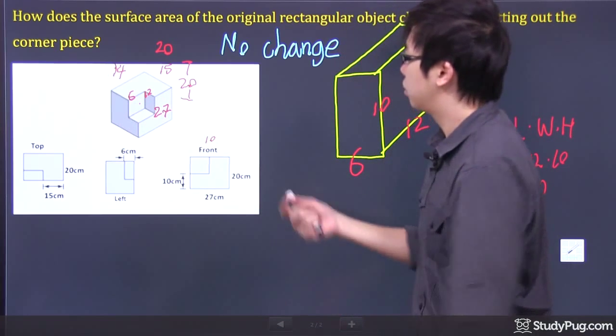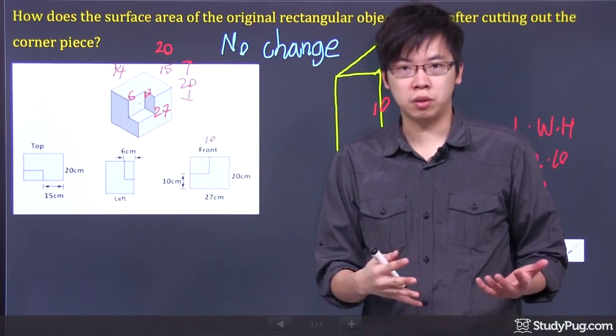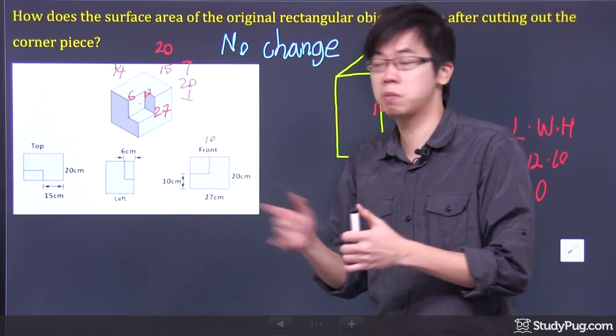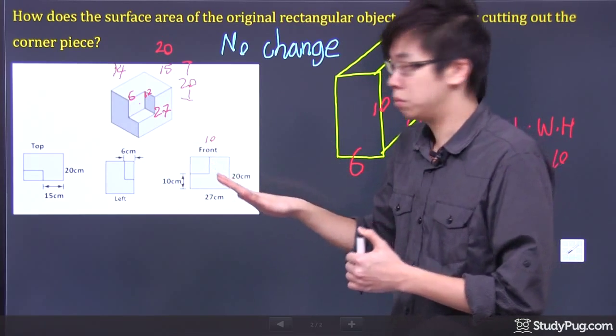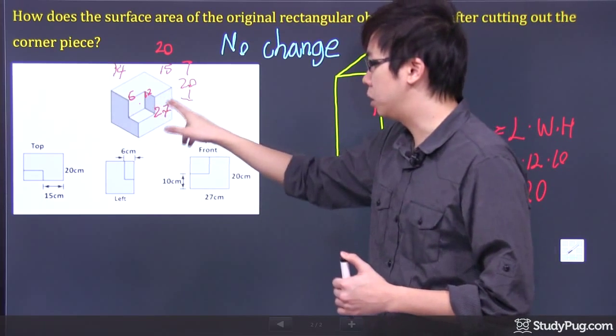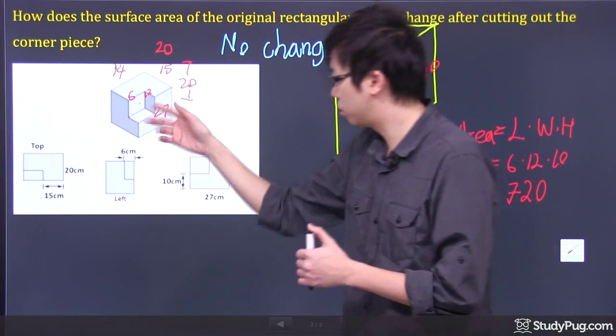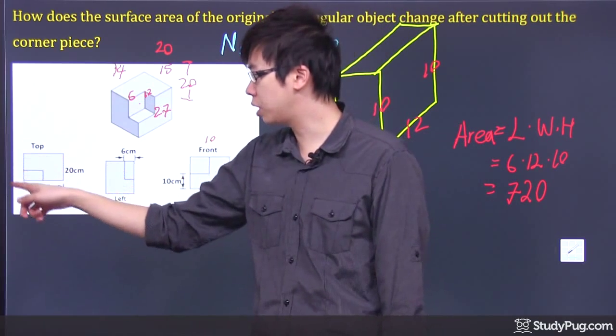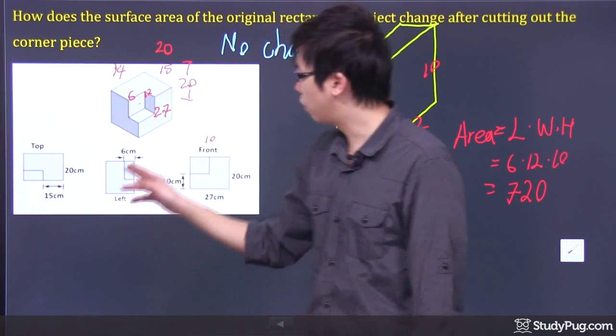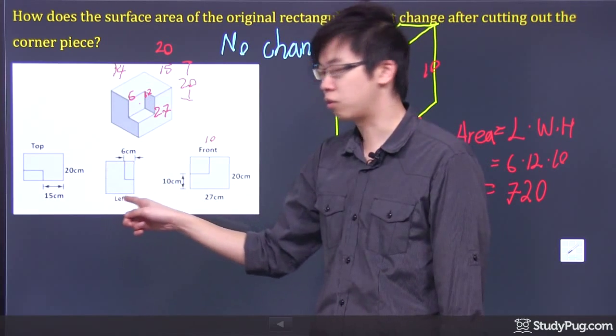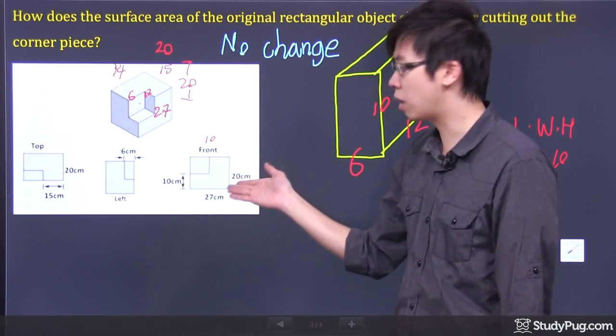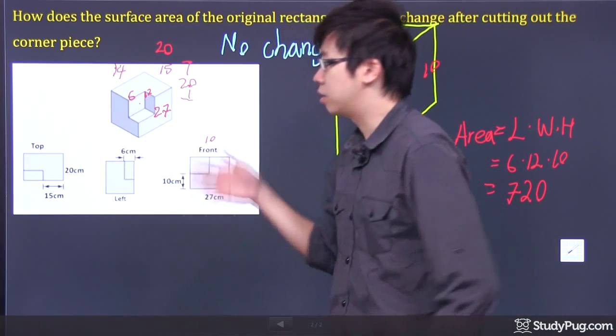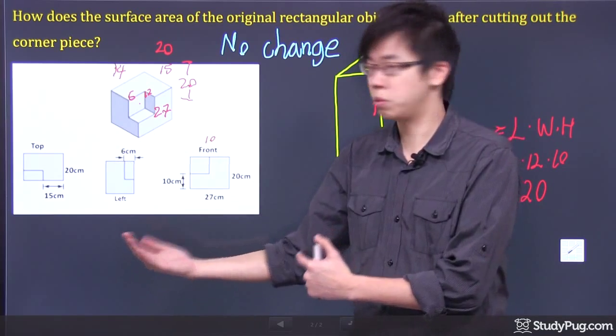But surface area is different from the volume. Surface area is when you look at an object from all the surfaces, right? So if you just imagine, if you're looking at this cutout piece right now, this diagram right here with all these dimensions, if you're looking from the top, you still see a perfect rectangle. If you're looking from the left, it is still a perfect rectangle. And if you see it from the right, which is still a rectangle. And what you're seeing right here is the same as before.